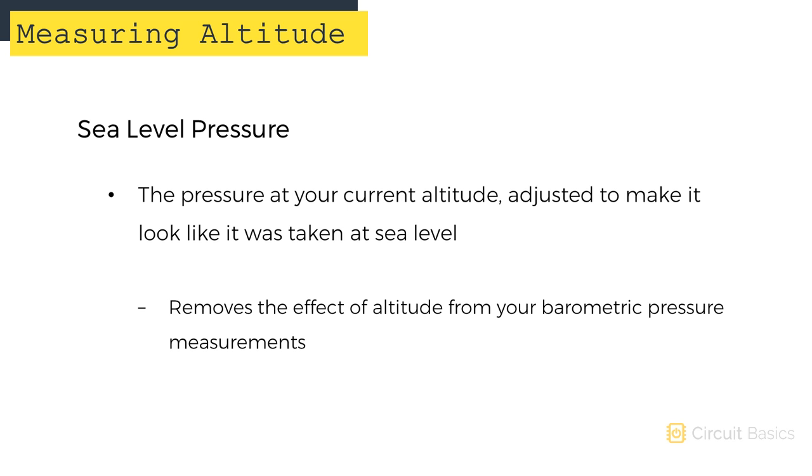Sea level pressure is the pressure at your current altitude that's been adjusted to make it look like it was taken at sea level. Using sea level pressure removes the effect of altitude from your barometric pressure measurements. So even if you live far away from the ocean, you can still find a sea level pressure for your exact location. To calculate it, you just need to know your altitude.